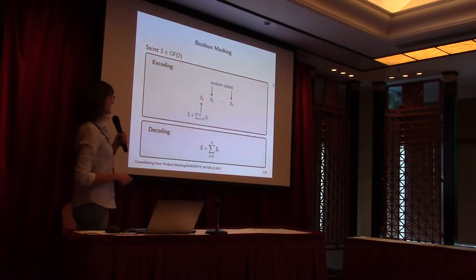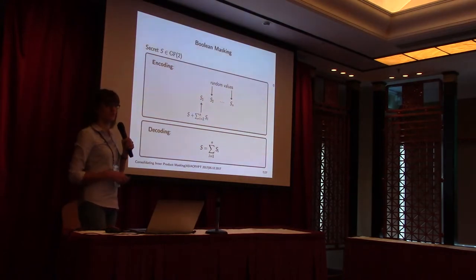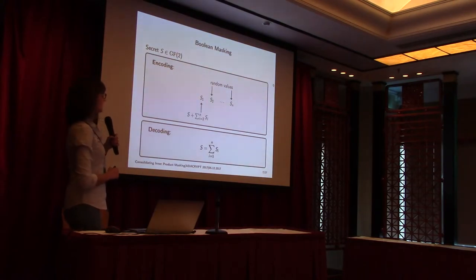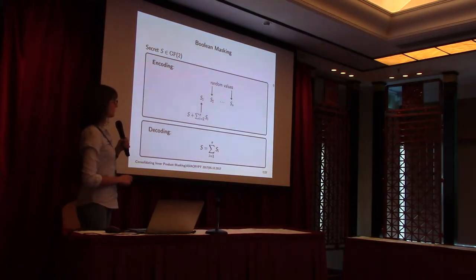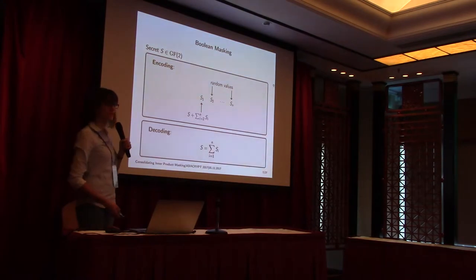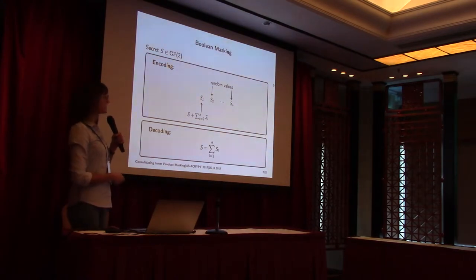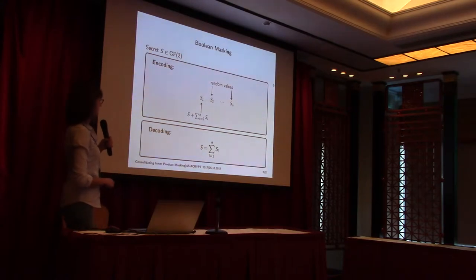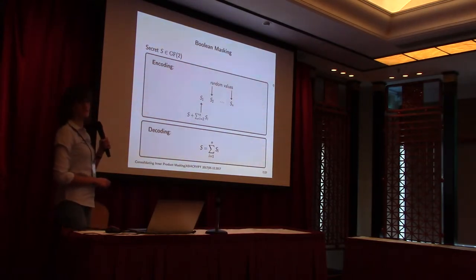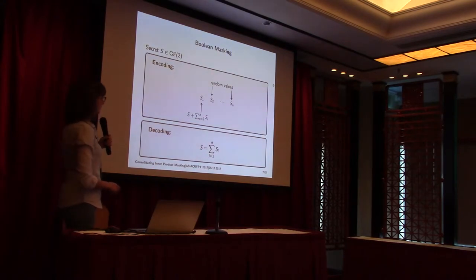Let me give some more detailed context. What is Boolean masking? If we have a secret S, in the Boolean masking encoding we take n minus one random values S2 through Sn and assign to S1 the value S plus the sum of all the other shares. It's intuitive to see that in order to decode the secret, we just add all the shares together. A really famous multiplication scheme is the ISW scheme from 2003 by Ishai, Sahai, and Wagner.